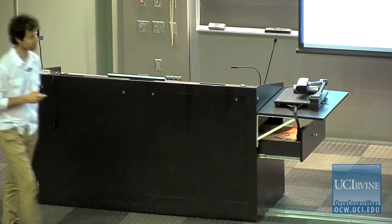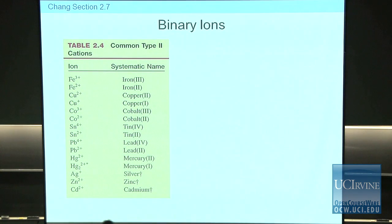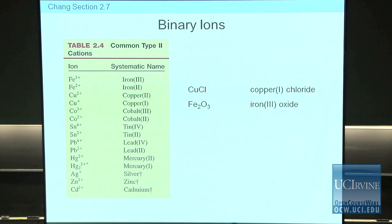There are a couple of exceptions. The first two columns from the left are Type 1 metals, and aluminum on the other side is also Type 1. Here's the same table from last time showing common Type 2 ions. It would be good if you're familiar with them — you don't have to know them by heart, but recognize them. For instance, iron can be 2+ or 3+ — that's very common. You have to be able to work with them, not just reproduce the table.